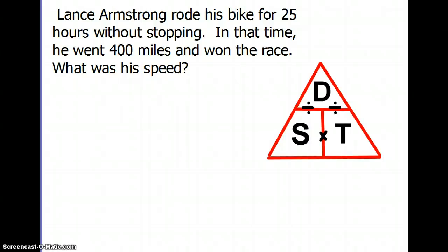Okay, here we go. Lance Armstrong rode his bike for 25 hours without stopping. In that time, he went 400 miles and won the race. What was his speed? So because we're looking for speed, we're going to circle or cover up what we are looking for, and in this case we're looking for S, which is speed. What we have left then is D over T.